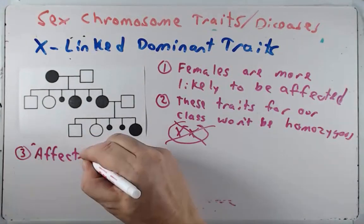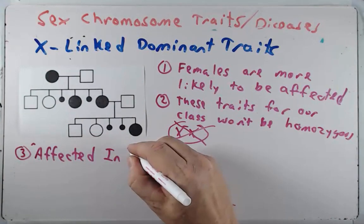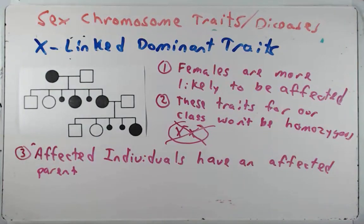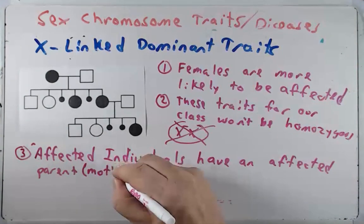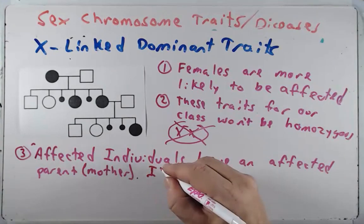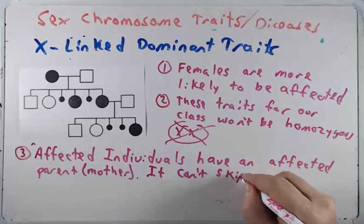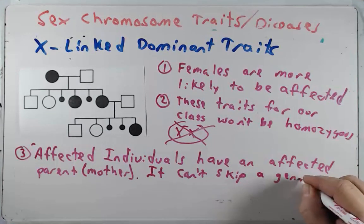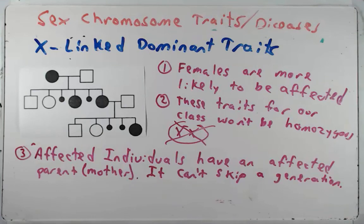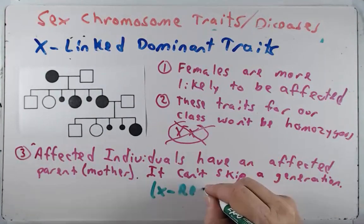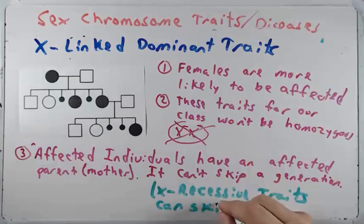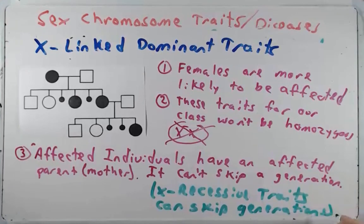Affected individuals have an affected parent — in our case it will be the mother. Connected to this: X-linked dominant traits can't skip a generation, just like autosomal dominant traits. I should also note that X-linked recessive traits can skip generations, just like autosomal recessive traits — it doesn't mean they have to skip generations, it just means they can.